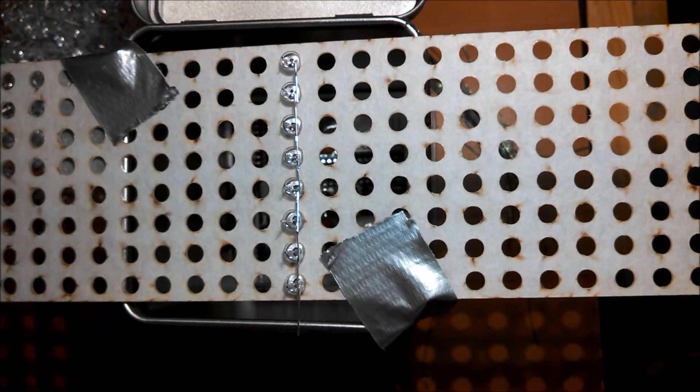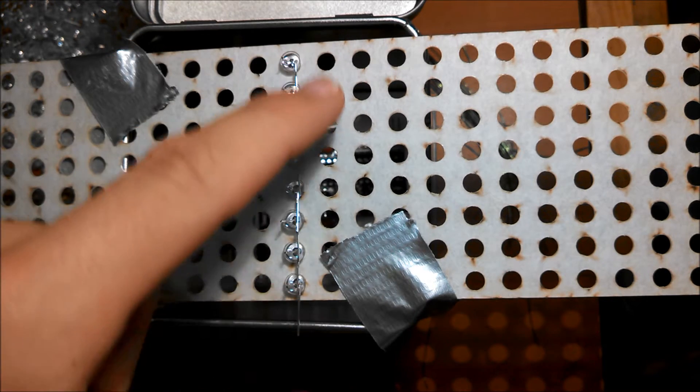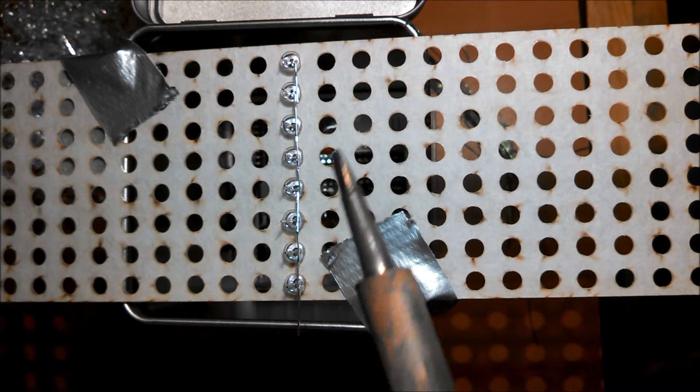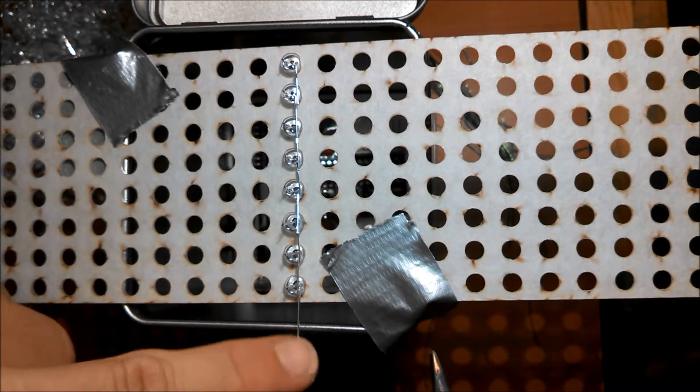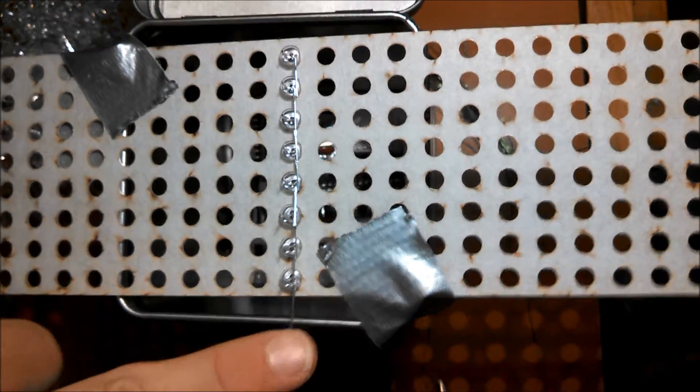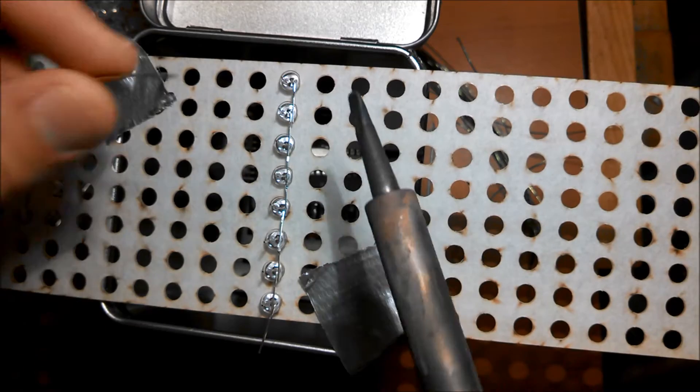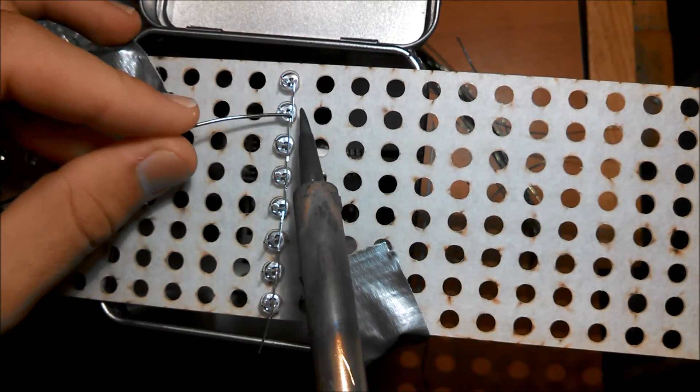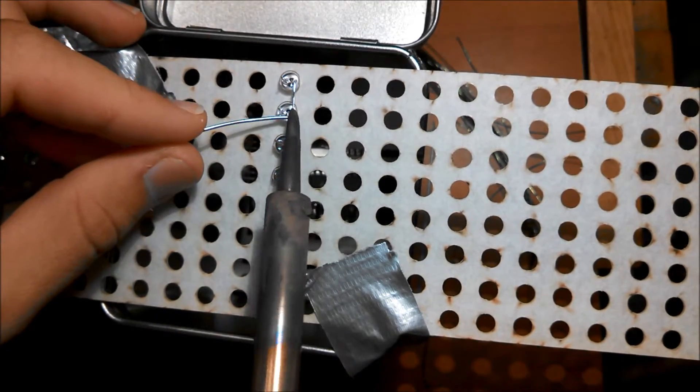Now that you've filled the whole column, take your soldering iron and you're going to solder all these together. Starting at the top with the bottom one facing down like this, take your soldering iron, take your solder and just solder these together one by one.